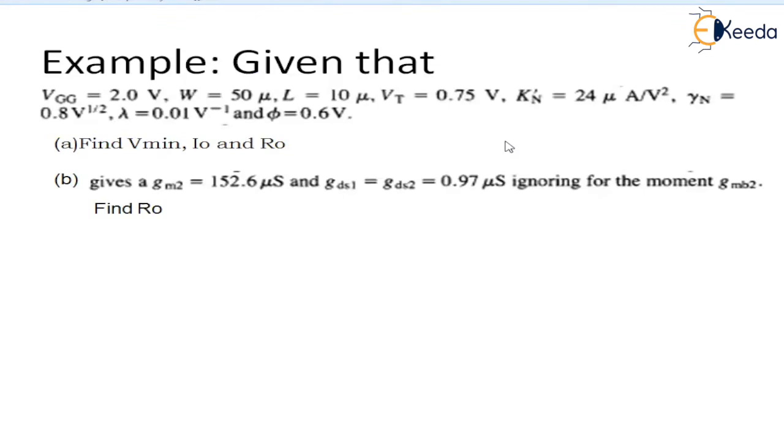In this example, it is given that EGG is 2 volts, W is 50 microamperes, length is 10 microamperes, VT (threshold voltage) is 0.75 volts, KN' is 25 microamperes per volt squared, gamma N is 0.8, lambda is 0.001 per volt, and phi is 0.6 volts. We first need to find the value of Vmin, I0, and R0 using the simple MOS configuration for the current source or sink.